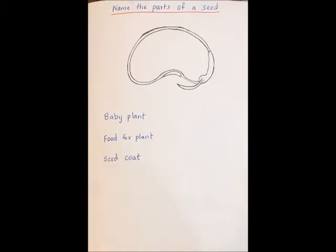The next one is parts of the seed. The child has to identify what the parts of the seed are. The names are given below the diagram, and he or she has to draw an arrow or a line and name the part accordingly.